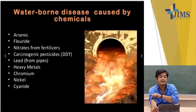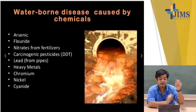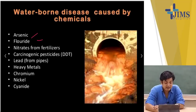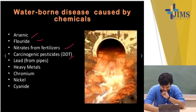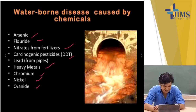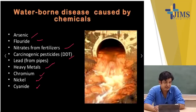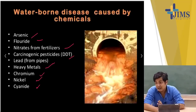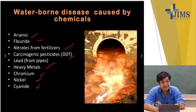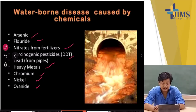Waterborne diseases caused by chemicals include: arsenic, fluoride, nitrates from fertilizers, DDTs which are pesticides used for malaria control, lead from pipes, heavy metals, chromium, nickel and cyanide. These heavy elements are released by factories into rivers and water bodies, causing water pollution and potentially causing diseases in humans who consume that contaminated water.